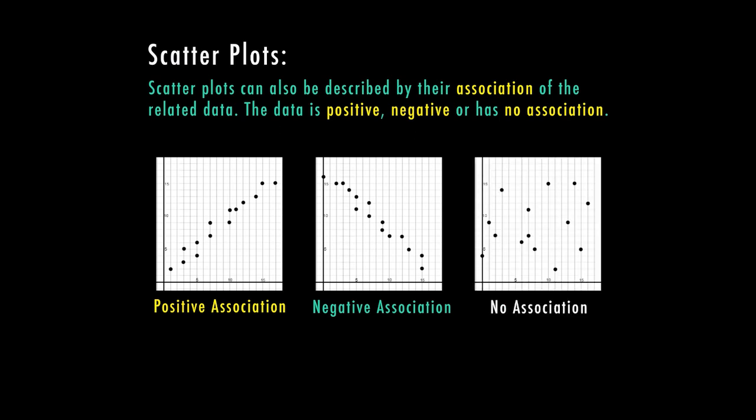And then last, sometimes we might have data that doesn't have any relationship at all, and in this case we would say it has no association. The points are scattered all over the graph. There is no way to find any sort of a trend or a line where they kind of follow in particular. We don't have really any clusters; everything is just an outlier. So if you have no way to tell if it's positive or negative, then it has no association.